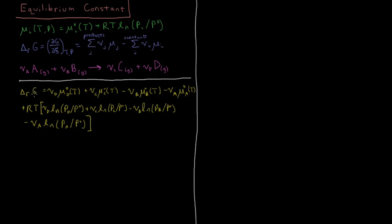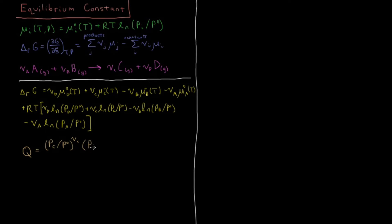We're going to define a very convenient quantity called the reaction quotient Q. Notice that whenever you have a value times a logarithm, that is equivalent to the logarithm of that quantity raised to that power. So νD·ln(PD/P⁰) equals ln((PD/P⁰)^νD). In our reaction quotient, we take each partial pressure and raise it to the power of its stoichiometric coefficient: (PC/P⁰)^νC and (PD/P⁰)^νD appear in the numerator.